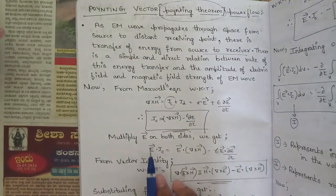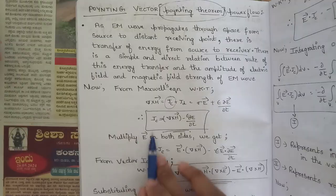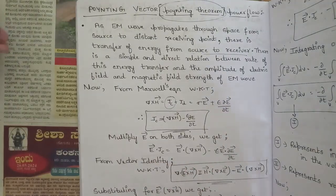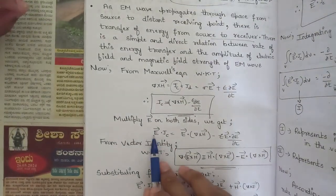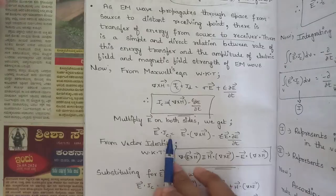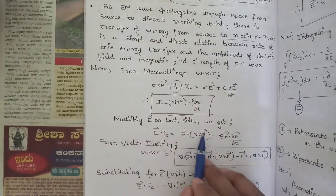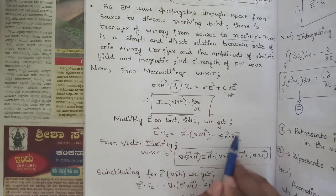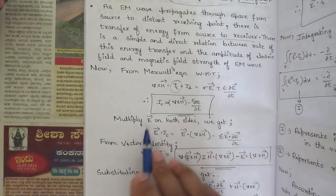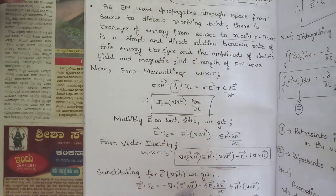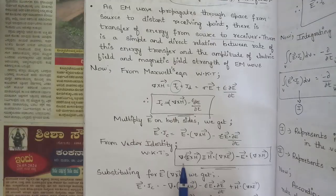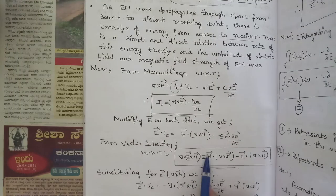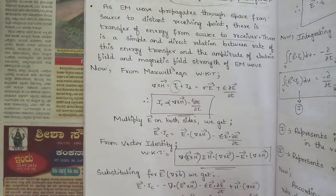Now multiply the E component on both sides of this equation. What we get is E·Jc = E·(∇ × H) − ε·E·(∂E/∂t). From a vector identity we have the relation: ∇·(E × H) = H·(∇ × E) − E·(∇ × H).